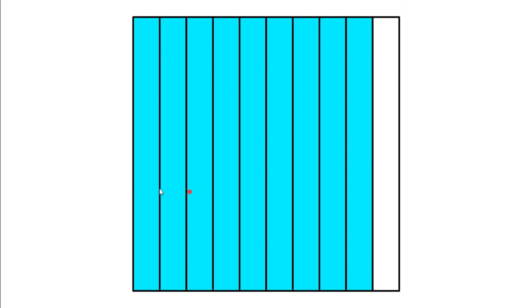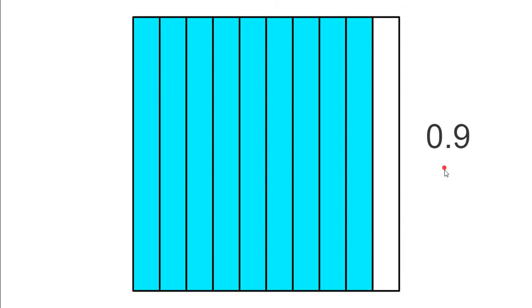We're going to turn this model into a decimal. Notice it's broken into 10 different parts and nine of them are shaded in. So that's nine tenths as a fraction. And my decimal is going to be said the same exact way. Anytime I have something that's to the tenths place, there's one digit after the decimal point. So this is nine tenths and that looks like this: zero and nine tenths — one digit after the decimal point.